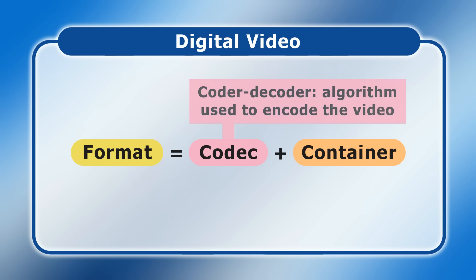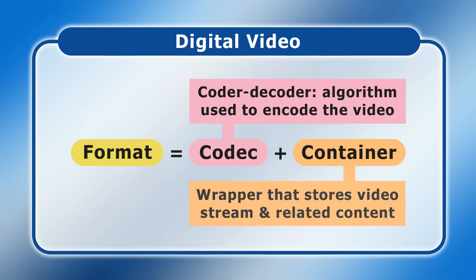Codec stands for Coder Decoder and refers to the algorithm used to digitally encode a video. Meanwhile, a container is a digital box or wrapper used to store video streams and related content in a single file. It is therefore digital video containers that can be identified by their file extension, and not digital video formats.